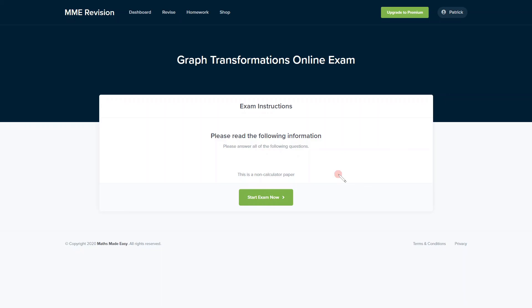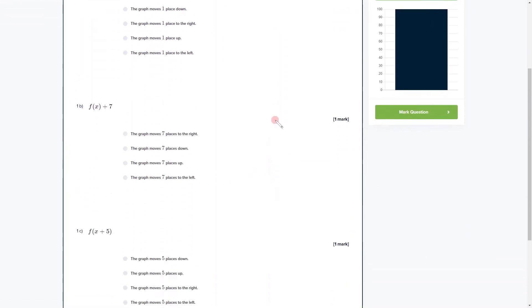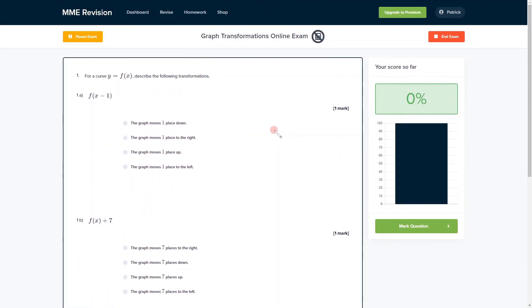Now understanding graph transformations is an important skill, so if you'd like to get some more practice in preparation for your exam, you can have a go at our online exam. You'll find loads of different questions, all of which you'll get instant feedback on, so you can keep track of the areas that you need to improve. If you're interested, you can have a go at the exam now and click the link below.